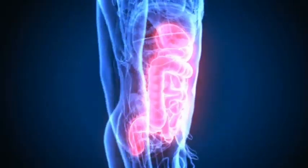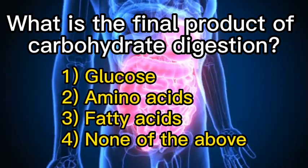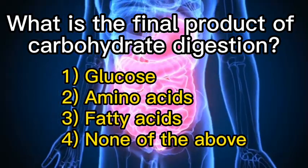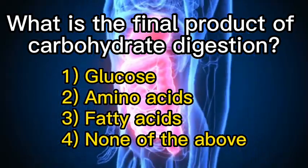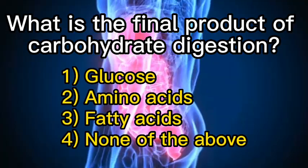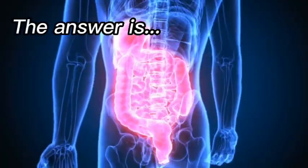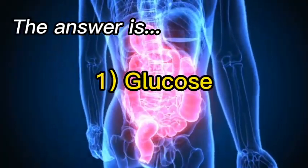What is the final product of carbohydrate digestion? One: glucose. Two: amino acids. Three: fatty acids. Four: none of the above. The answer is one, glucose.